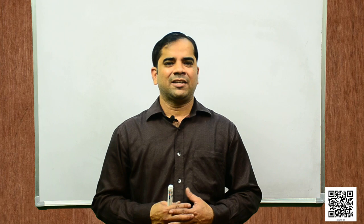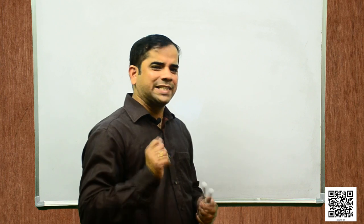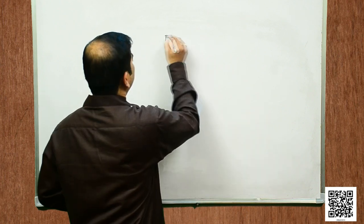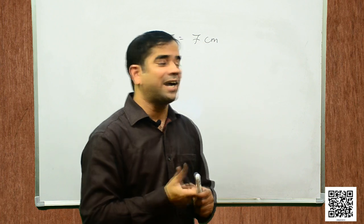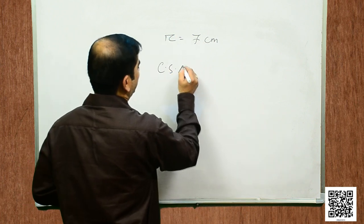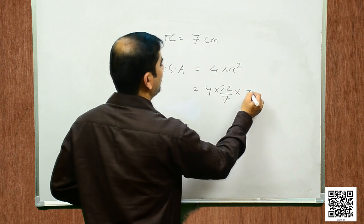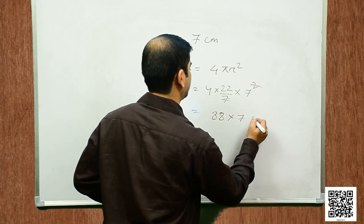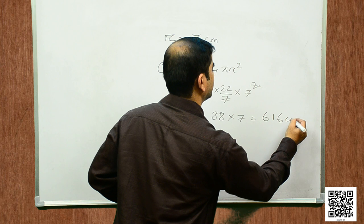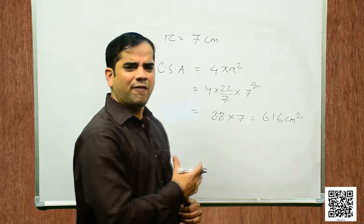Let us now discuss example 7. Find the surface area of a sphere of radius 7 centimeters. Given radius = 7 cm. Curved surface area = 4 π r² = 4 × 22/7 × 7² = 616 square centimeters. This is a simple one. Hope you have understood this.